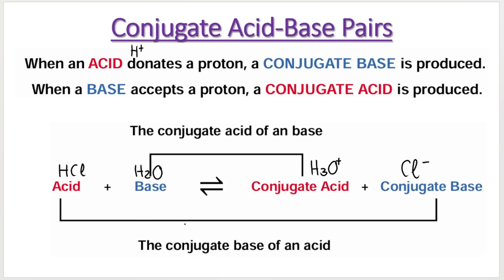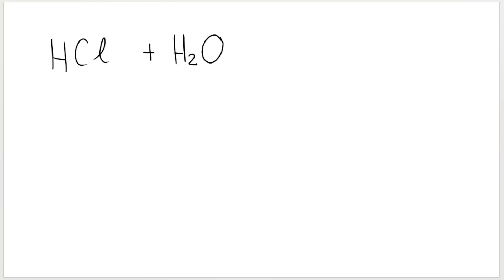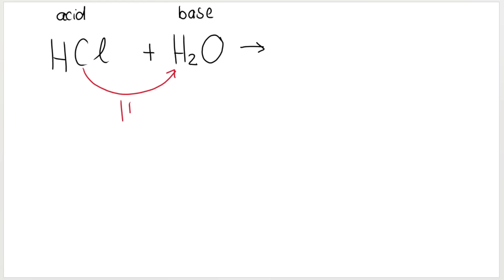If we take a look at this basic example, we've got HCl, which is my acid, and in this case water is my base. Remember, water is a very good ampholyte — a substance that can either act as an acid or as a base depending on what it's reacting with. So here water is my base and HCl, hydrochloric acid, is my acid. Acids are proton donors, so my HCl is going to give away its H plus, its proton, to my base.